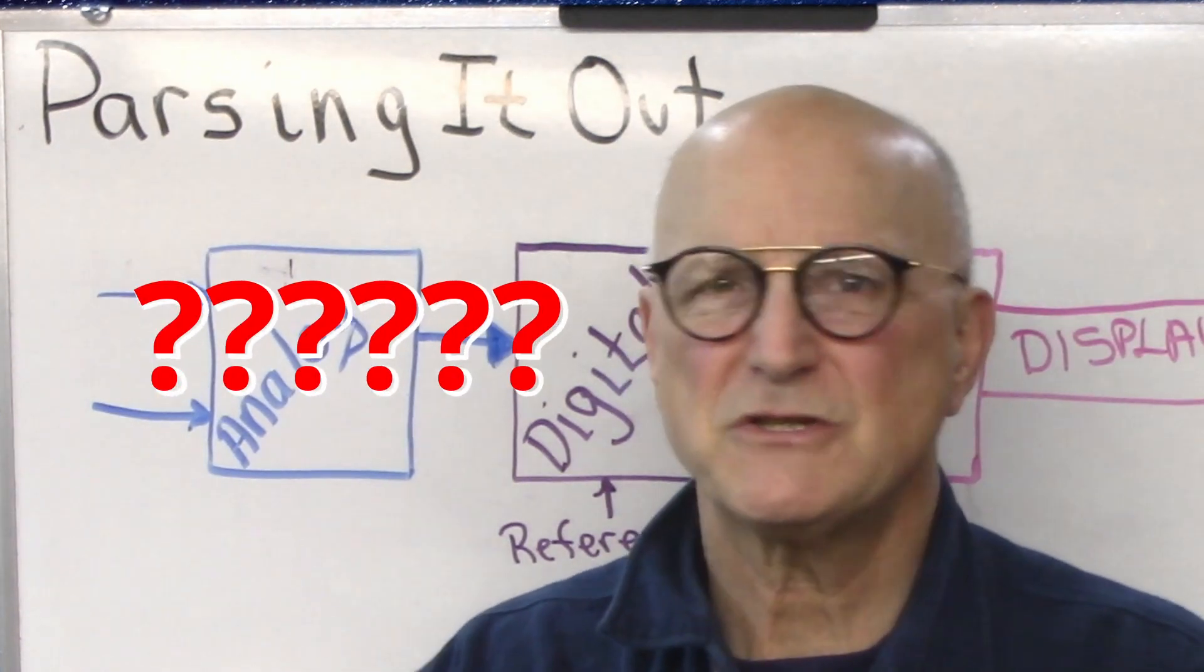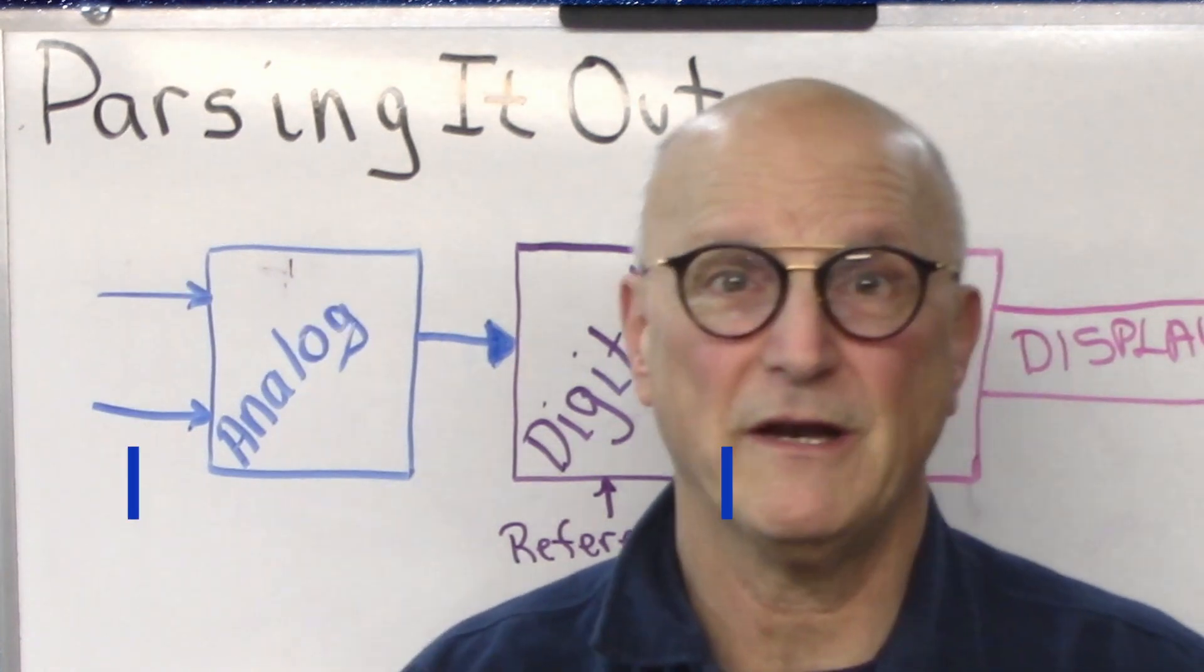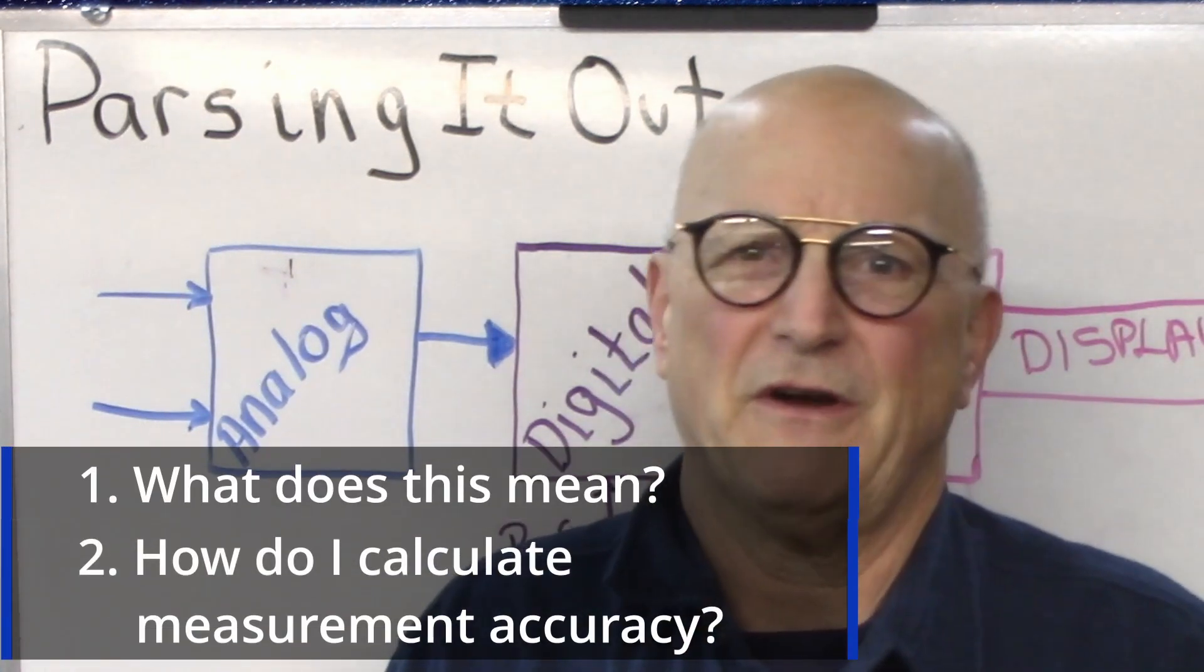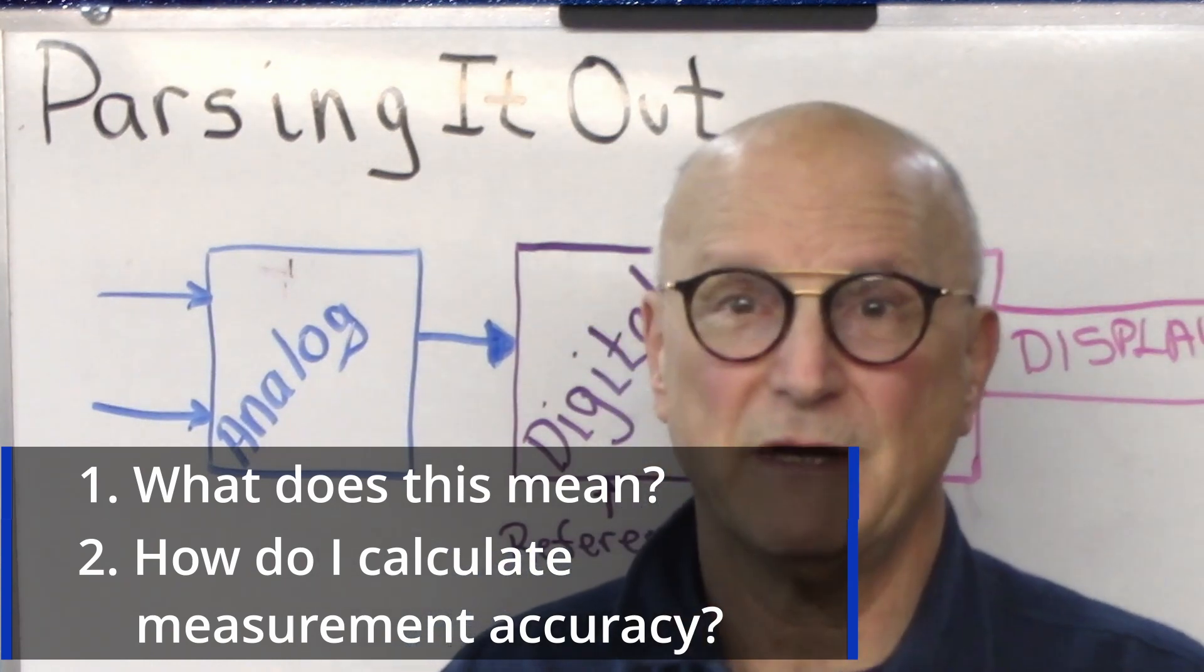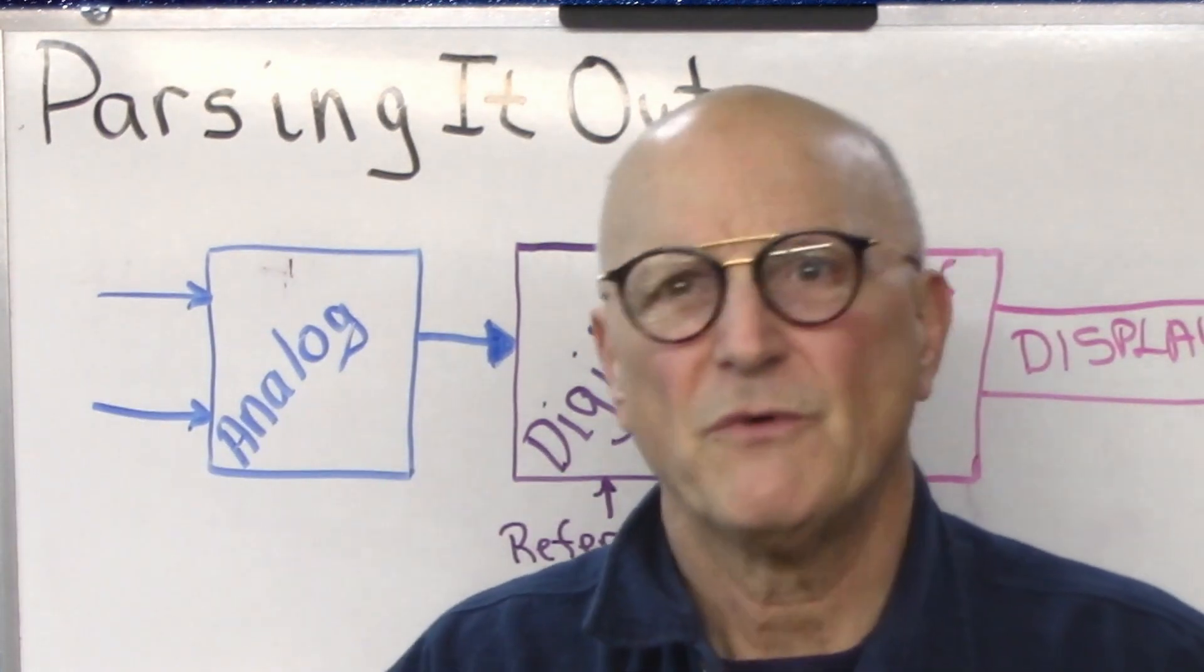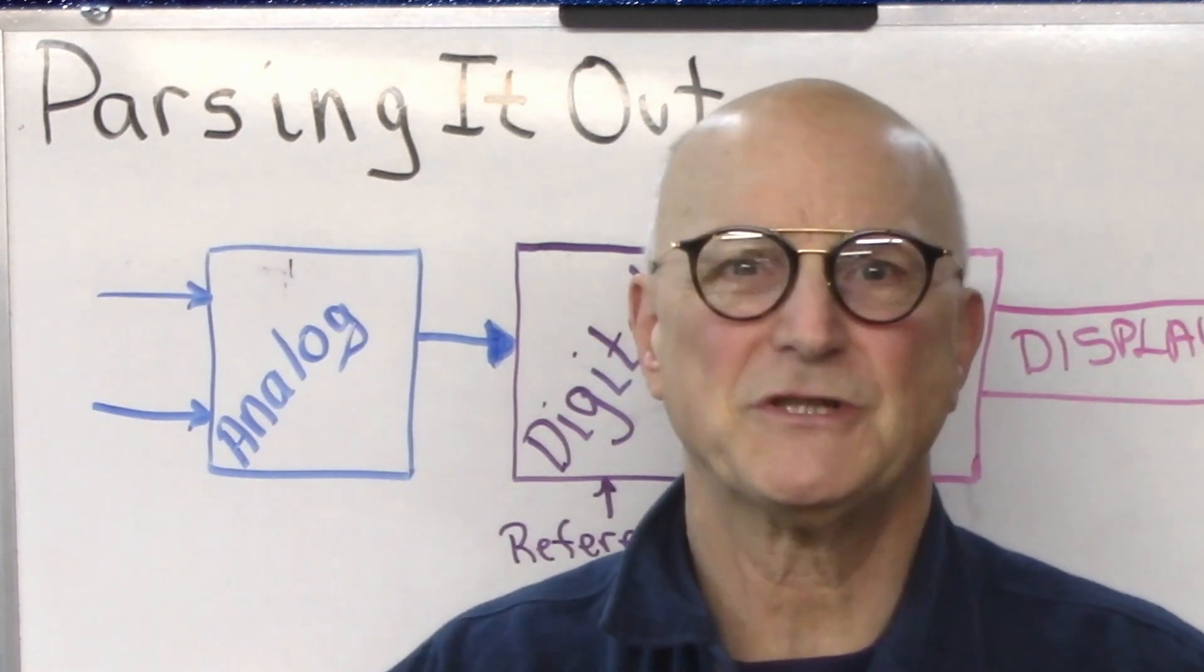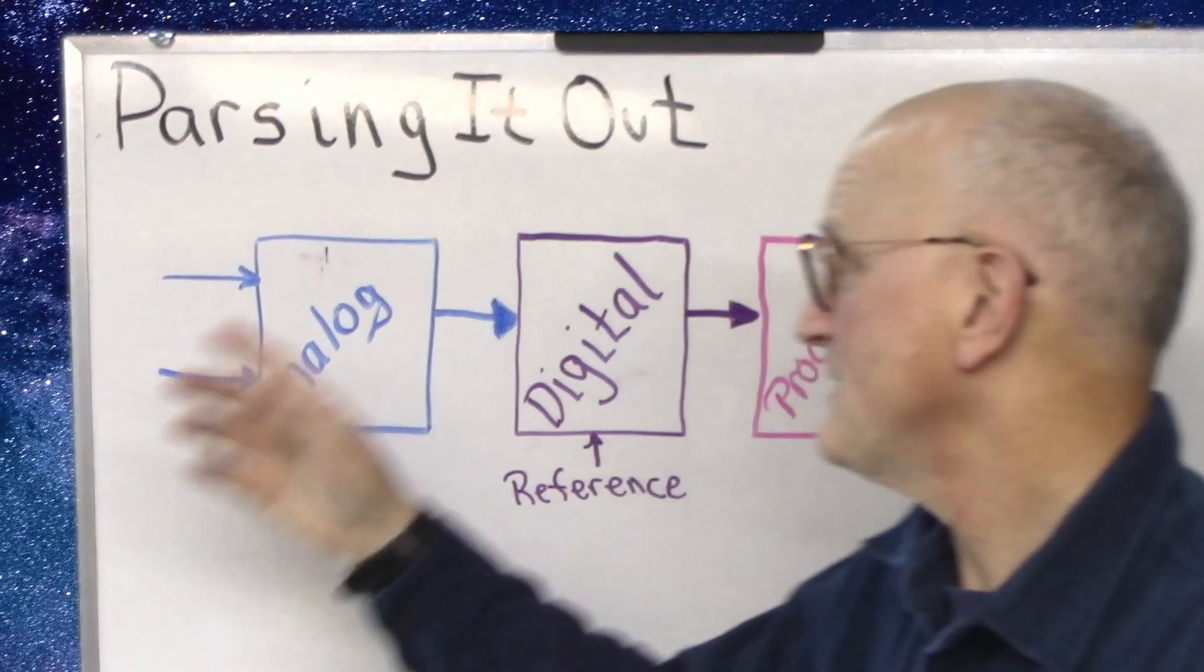What's up with this? It raises two distinct questions that are related to one another. What does this mean? And how do I figure out how accurate a particular measurement is? To understand this, we have to have a handle on the measurement system topology itself.